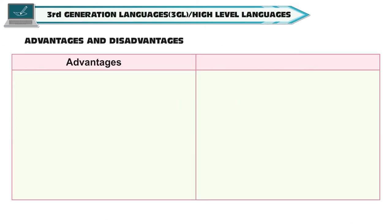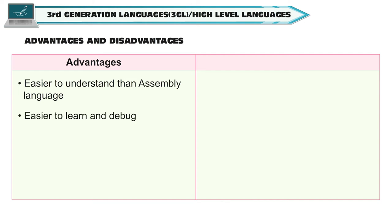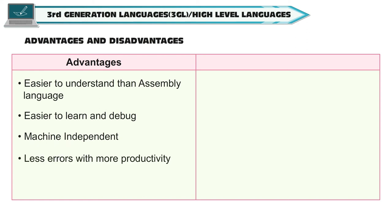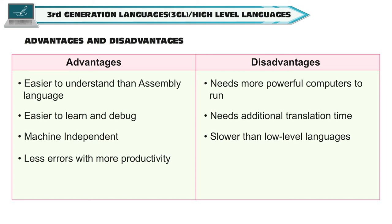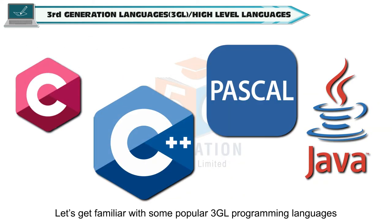Third generation languages had both advantages as well as disadvantages. Advantages are: easier to understand than assembly language, easier to learn and debug, machine independent, and fewer errors with more productivity. Disadvantages are: needs more powerful computers to run, needs additional translation time, slower than low-level languages, and less memory efficient.